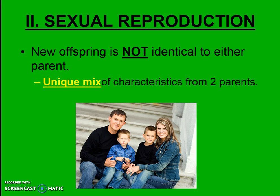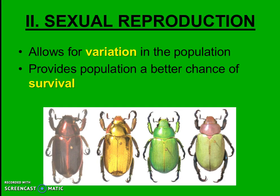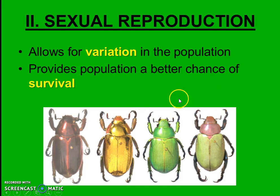In comparison to asexual reproduction, the new offspring in sexual reproduction is not exactly the same as or identical to either parent. They are a unique mix of the characteristics from both parents. This is very different from asexual reproduction and has some benefits, because the variation we see among siblings and in a whole population might make for a better chance of survival.